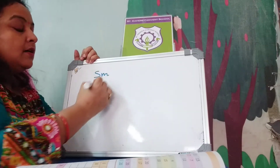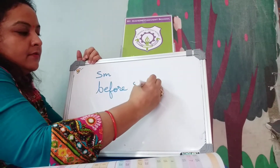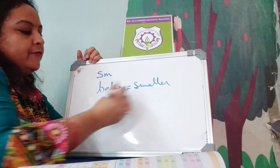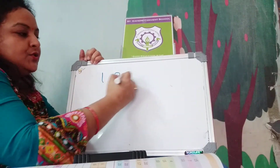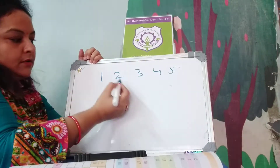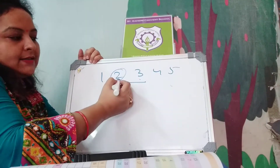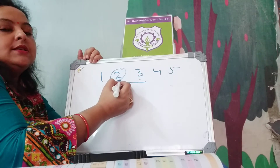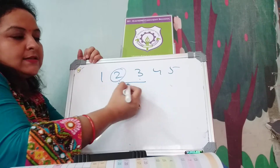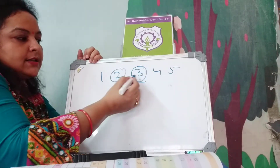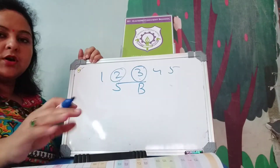Before number is smaller number. Like: 1, 2, 3, 4, 5 — 2 comes before 3, so in these 2 numbers, 2 is the smaller number. But the bigger number is 3, because it comes after 2. This is bigger, this is smaller.